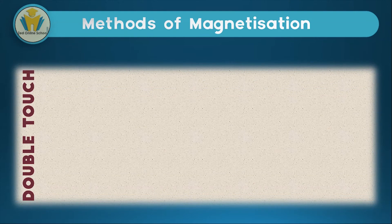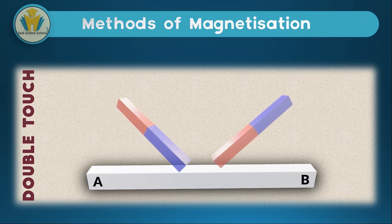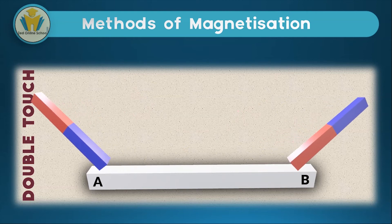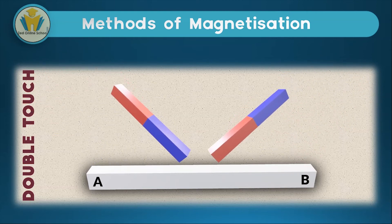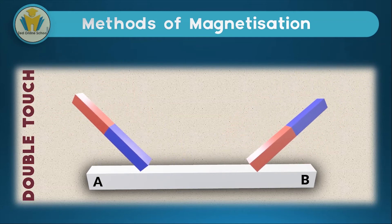The next kind of method is double-touch stroking. In this kind of magnetization, we're going to have two magnets being used to magnetize the magnetic material. The two magnets will have different kinds of poles used in stroking — the one on our left has its south pole used in stroking, while the one on our right has its north pole used in stroking. You should pay attention that these magnets are moved in opposite directions, and after roughly 50 times, the magnetic material will be magnetized.